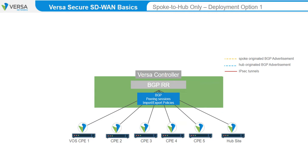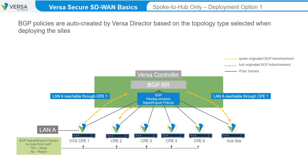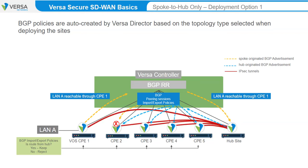Starting with spoke-to-hub only: LAN-A is reachable through CPE-1. CPE-1 advertises reachability to LAN-A to the Versa controller, which re-advertises the LAN-A prefix to all CPE devices and the hub. Because the CPE devices have been configured as spokes in a spoke-to-hub-only topology, they discard the route as it arrives. The hub, however, is configured to accept all of the routes from remote CPEs and installs them in its routing table. The hub advertises its LAN routes to the spokes. Because the routes from the hub LAN are marked differently, the spokes accept the hub-sourced LAN routes and install routing and forwarding information to the hub-connected resources.